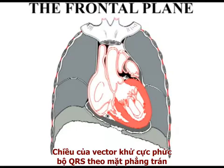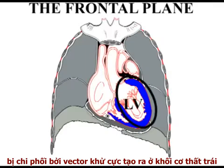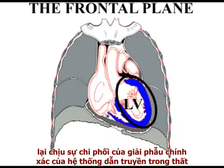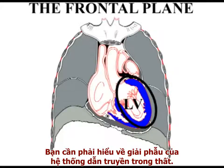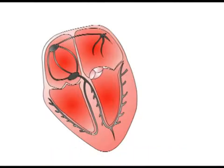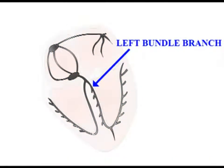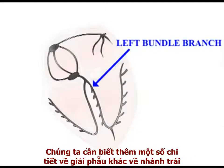In normal circumstances, the direction of the frontal QRS vector is dominated by the depolarization vectors generated in the large left ventricular muscle mass. The pattern of depolarization of the left ventricle is in turn dictated by the precise anatomy of the intraventricular conducting system. To understand the cardiac axis and axis deviation, you need to be familiar with the anatomy of the intraventricular conducting system. We simplified our description of ventricular conduction in section 1 to aid comprehension, considering the left bundle branch as a single anatomical entity. The analysis remains valid, but to understand axis deviation in disease, we need a little more anatomical detail.